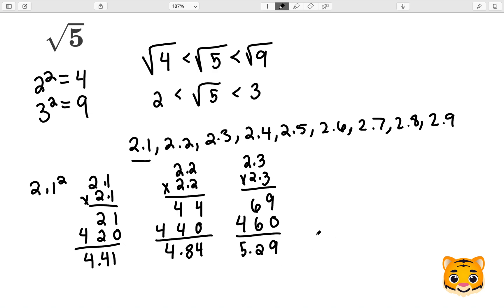We can then see if 4.84 is closer to 5, or if 5.29 is closer to 5 by subtracting. So we'll do 5 minus 4.89 to get 0.11